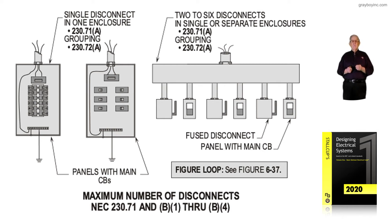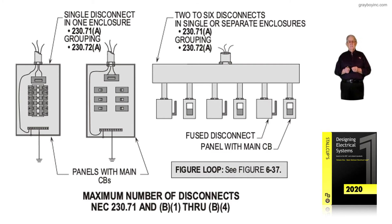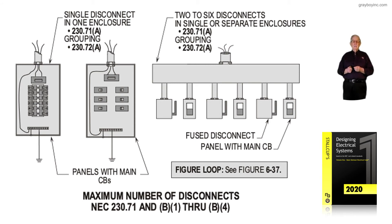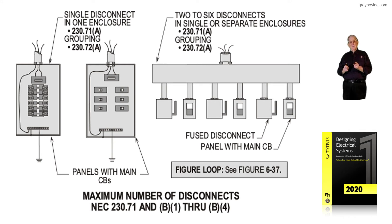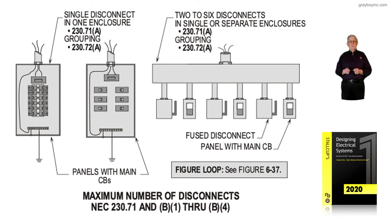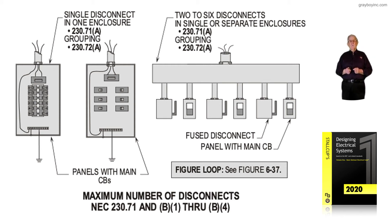We know that they have to be individual, as you see to the right of the illustration. Either one of those two on the left-hand side would have to have a main ahead of them. And in the illustration to the right, 230.72A, they have to be grouped as shown. We couldn't have, for example, a meter base outside with three mains and three more mains inside ungrouped — you'd have to have a main ahead of them, or two to six mains as shown to the right.